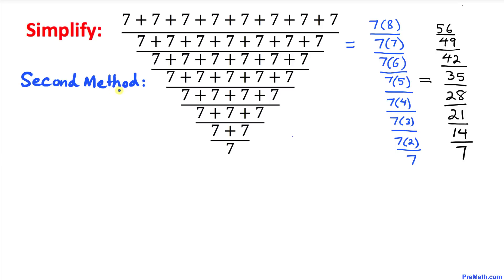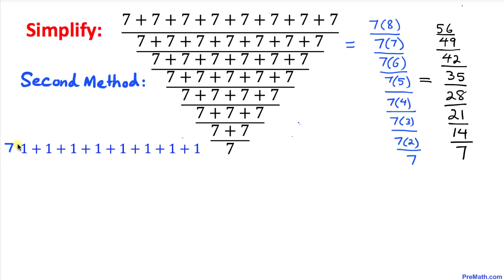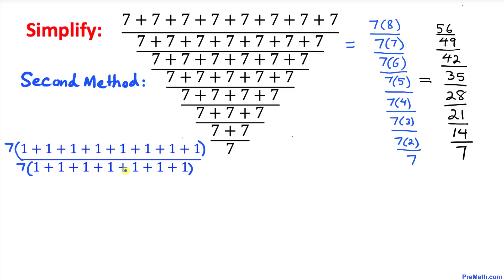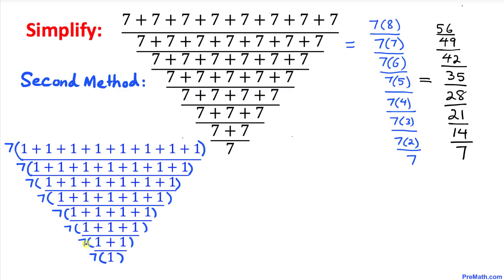Now let me show you a second approach. Let's focus on the numbers on the very top. Since seven times one is seven, I can write each numerator as seven times a bunch of ones in parentheses. Similarly I can factor out seven from each denominator across the board. Now we can see that this seven and this seven cancel, this seven and this seven cancel, and so on — all the sevens are gone.